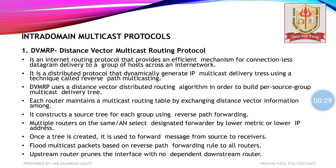Today we will start with Intradomain Multicast Protocols. Among them, DVMRP — Distance Vector Multicast Routing Protocol — is the first Intradomain Multicast Protocol. DVMRP is an Internet Routing Protocol that provides an efficient mechanism for connectionless, that is wireless, packet delivery to a group of receivers or hosts. It is a distributed protocol that dynamically generates IP multicast delivery trees using a technique known as reverse path multicasting.